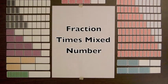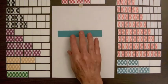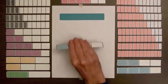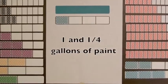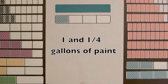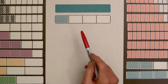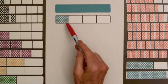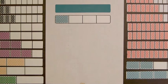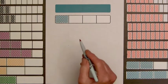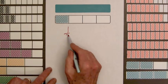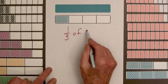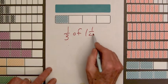If one and one-fourth gallons of paint — let that be one full gallon and one-fourth of a gallon — are used to paint three walls of the same size, how much paint is used for each wall? We are going to spread one and one-fourth gallons equally over three walls, so each wall requires one-third of this amount. We want one-third of one and one-fourth.